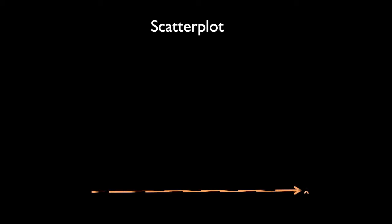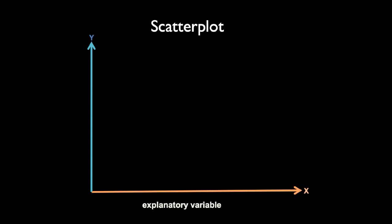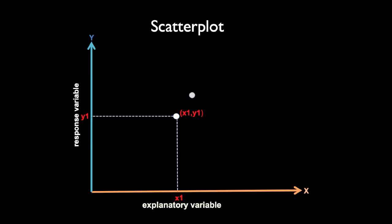Let me explain this using a graph. We have an x-axis and y-axis. We use the x-axis for the explanatory variable — the explanatory variable should always be on the x-axis and the response variable on the y-axis. We can mark a point using coordinates: the x value is x1, the y value is y1, and we write the coordinate as (x1, y1).